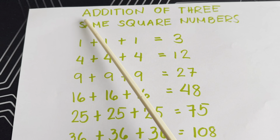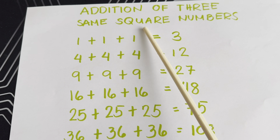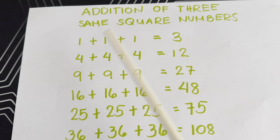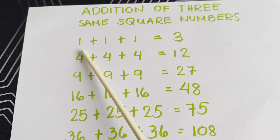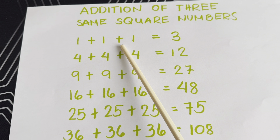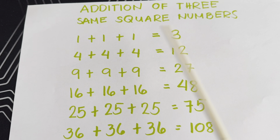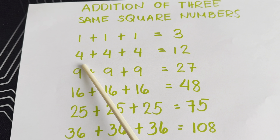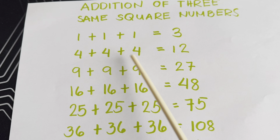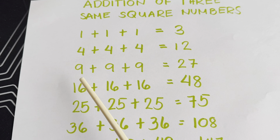Join me and let's summarize. Addition of 3 Same Square Numbers. 1 plus 1 plus 1 is equals to 3. 4 plus 4 plus 4 is equals to 12.